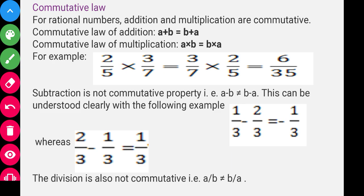Commutative law: for rational numbers, addition and multiplication are commutative. That means a + b = b + a, and a × b = b × a. For example, 2/5 × 3/7 can be written as 3/7 × 2/5, and both equal 6/35, so left-hand side equals right-hand side.